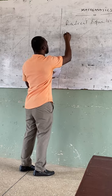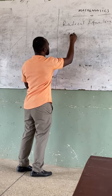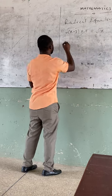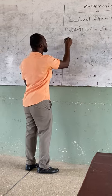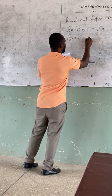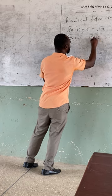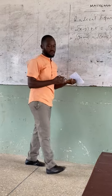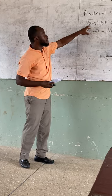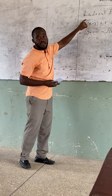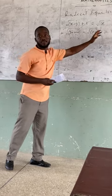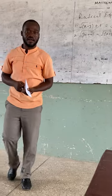Examples of radical equations: number one, square root of x minus 3, plus 1, is equal to square root of x. Number two, square root of 3x plus 4, minus square root of x plus 5, is equal to 1. These are examples of radical equations because when you look at the first one, we have a square root and a variable in the square root.